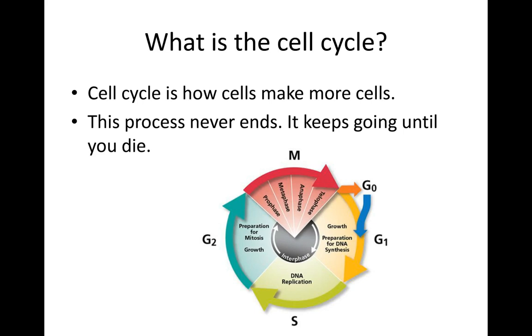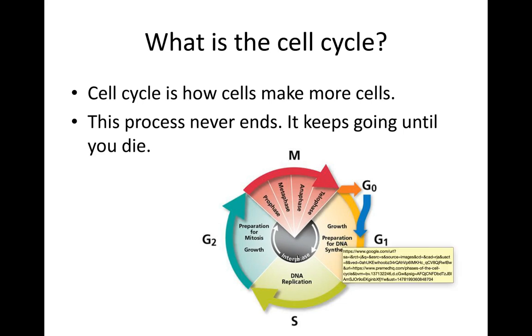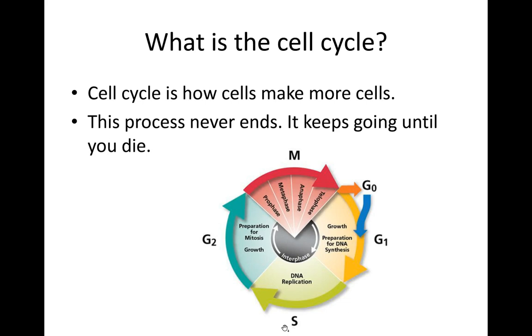Here is a picture of our cell cycle. It's going to start in G1, which is the first step of interphase. Then we go G1, S, G2, and then the M phase, which is mitosis.